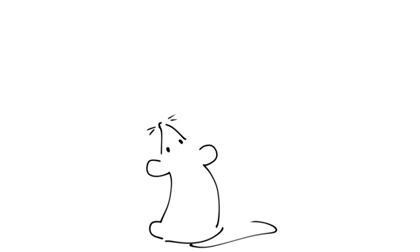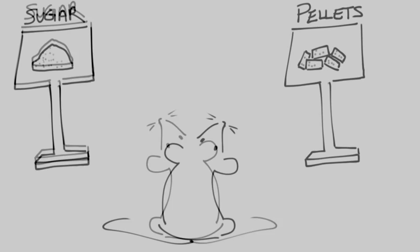Here's the setup. If the animals press the left lever, they'll get sugar. If they press the right lever, they'll get pellets. So far, so good.